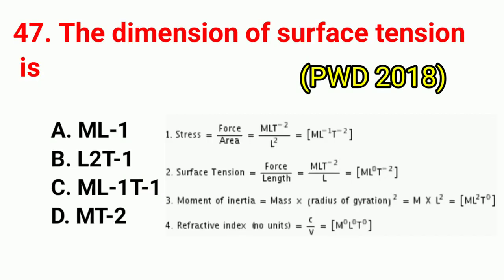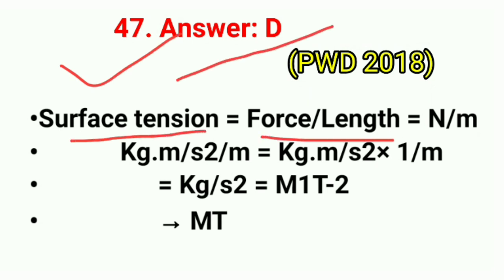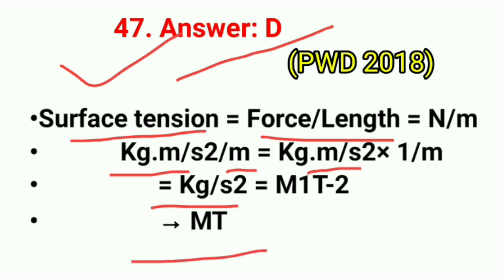Question No. 47. The dimension of surface tension is? Correct answer is option D: M¹T⁻². Surface tension = force/length = Newton/meter = kg·m/s² / m = kg/s² = M¹T⁻².